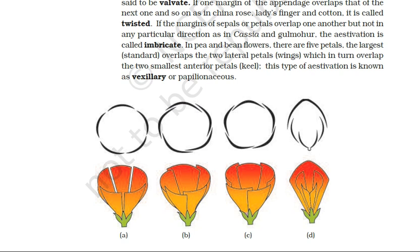In the twisted type, one margin of the appendages overlaps that of the next one and so on. One margin of the sepal or petal overlaps the margin of the next sepal or petal, and one margin is overlapped by the margin of another segment. Example: hibiscus or china rose.